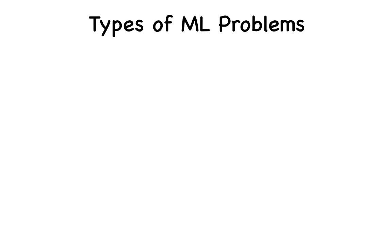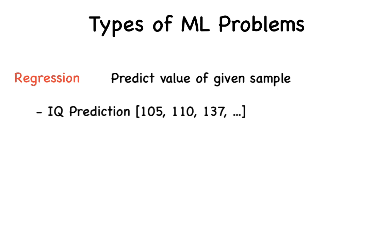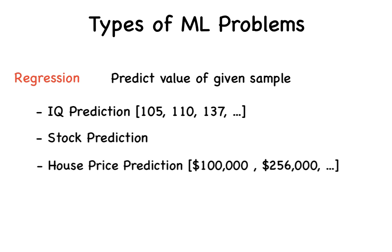Now, the second type of problem that we run into is regression. This involves prediction of a value for a sample. Some problems like this involve determining the IQ of a person or an animal, or predicting stocks over the course of time, or predicting the price of a house based on certain characteristics.